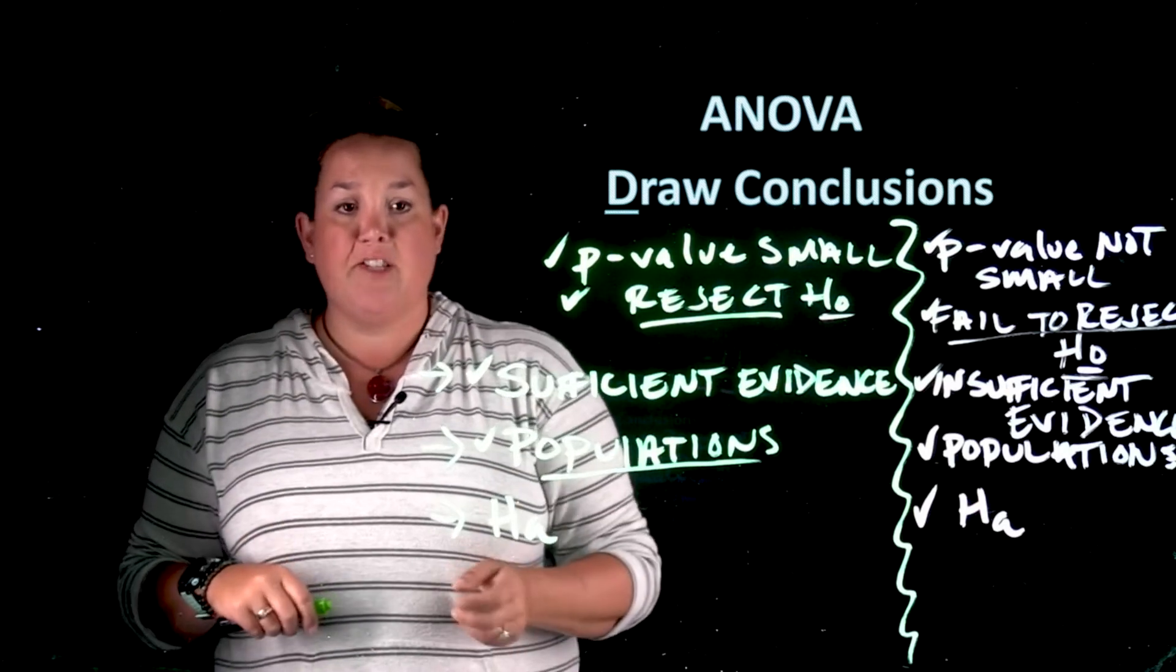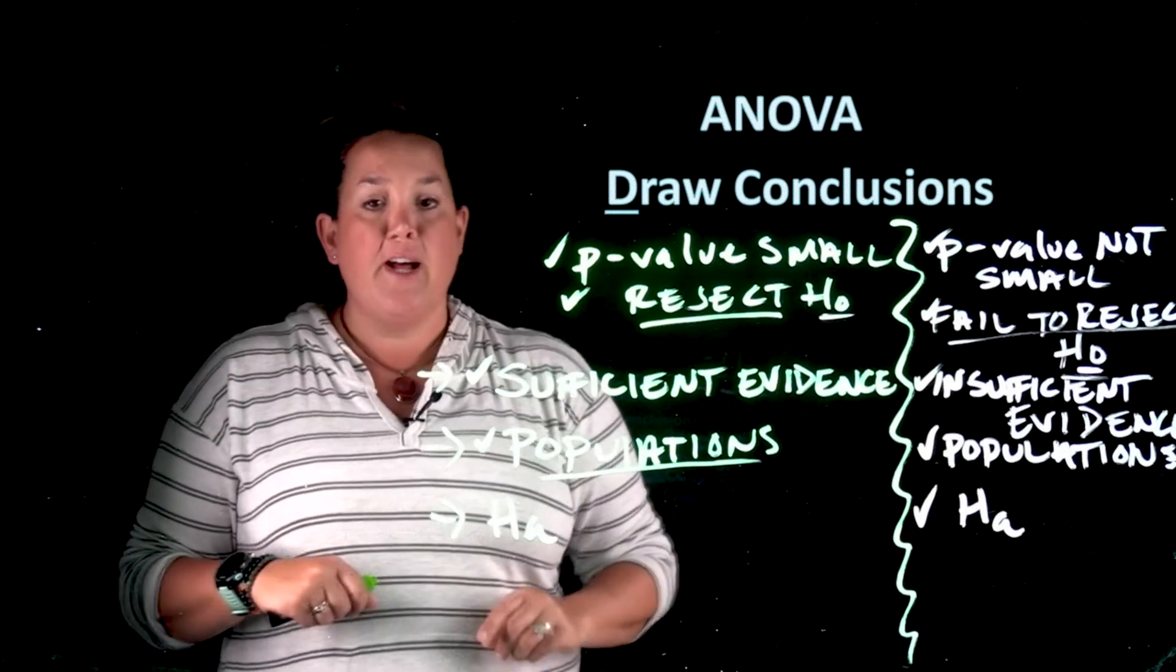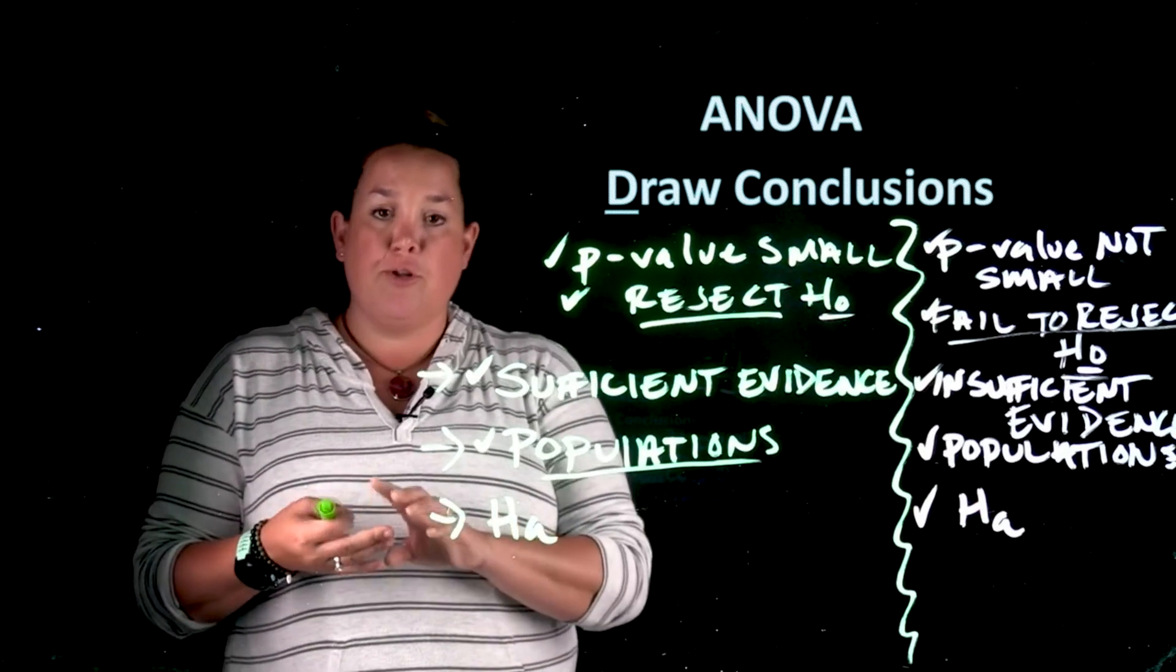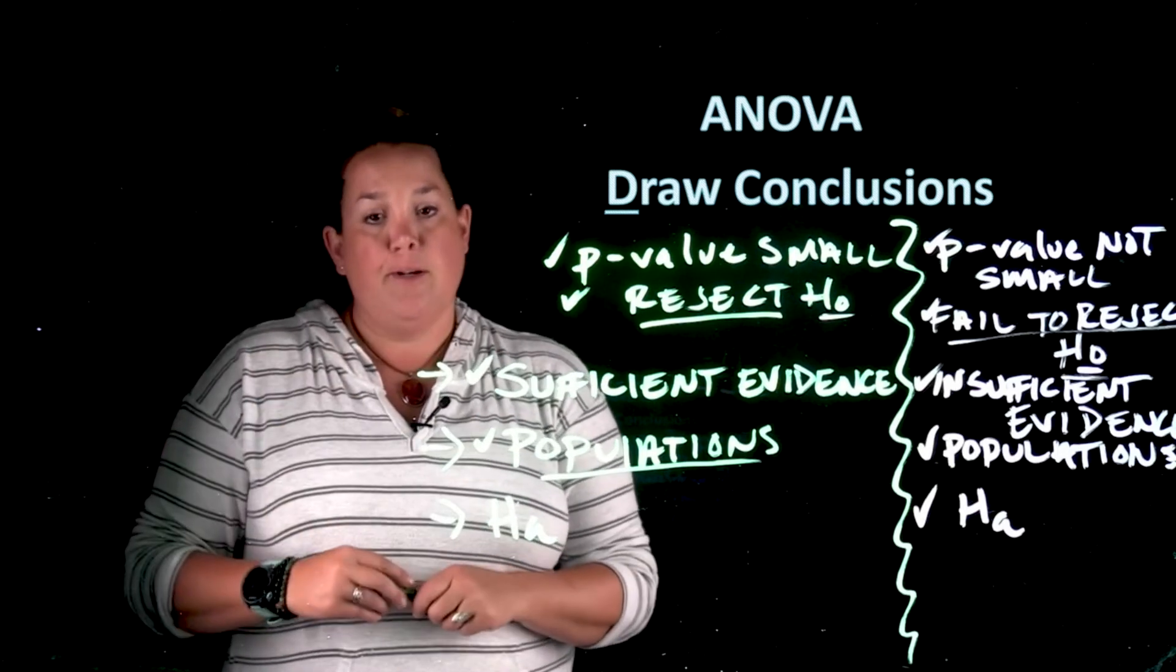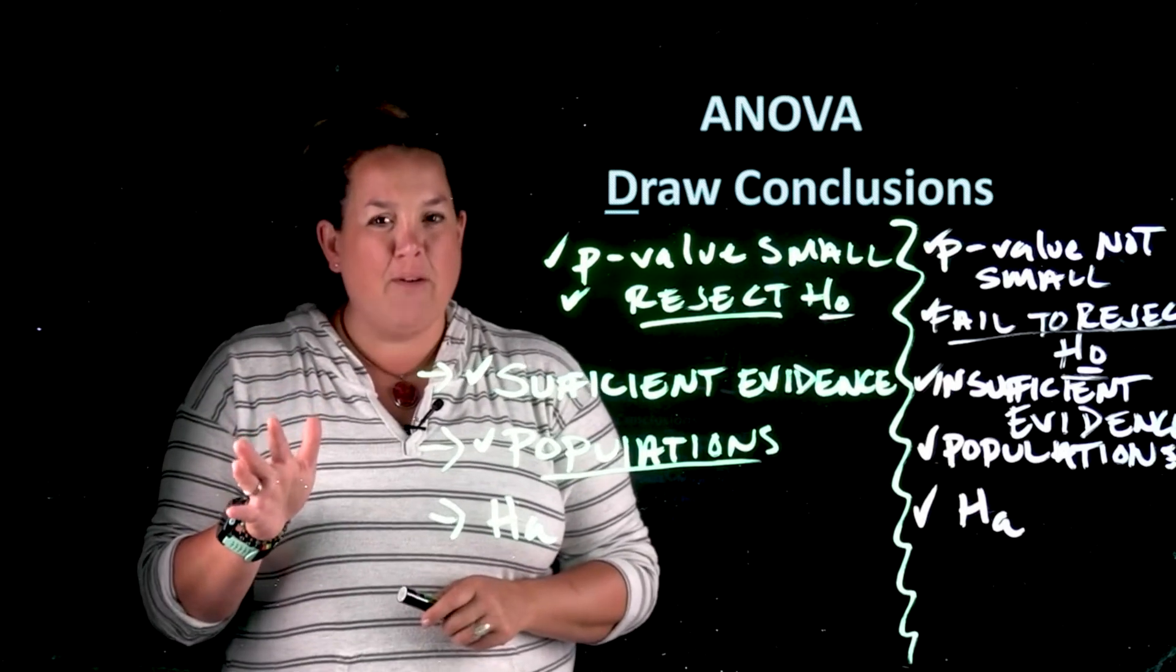You have the null where mu1 equals mu2 equals mu3 equals mu4, and the alternative is that at least one mean is different. So when you state this you might say there's sufficient evidence to suggest freshman, sophomore, junior, senior, at least one of those mean study times differs. So not really a lot of information.